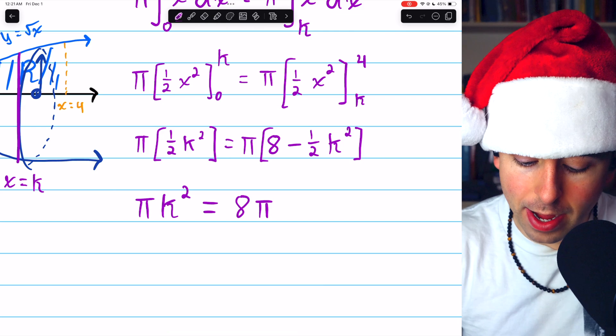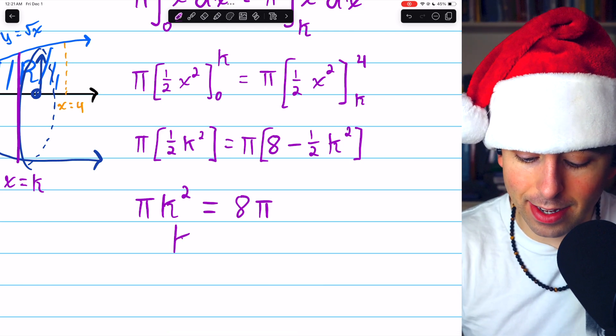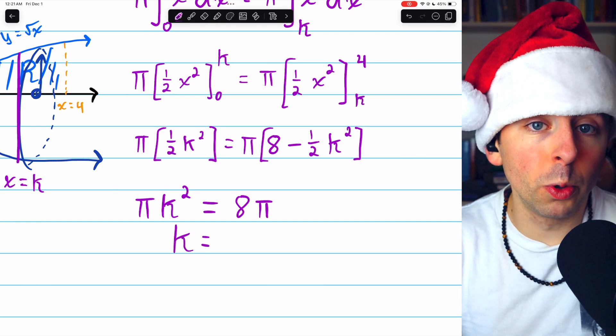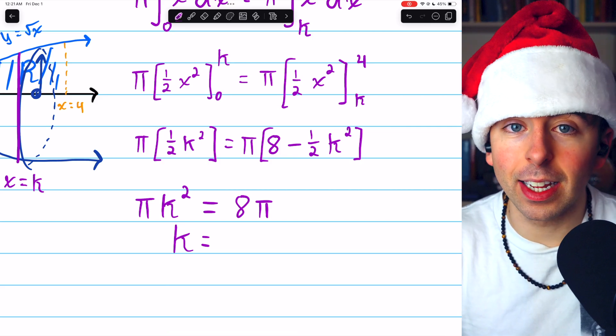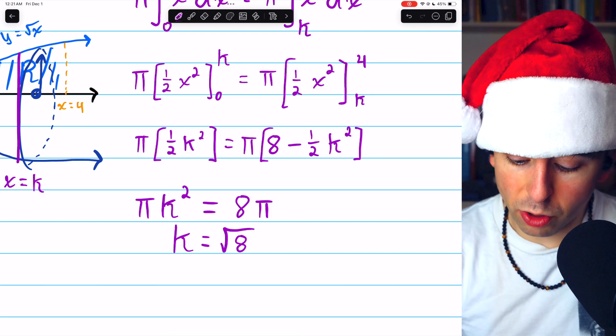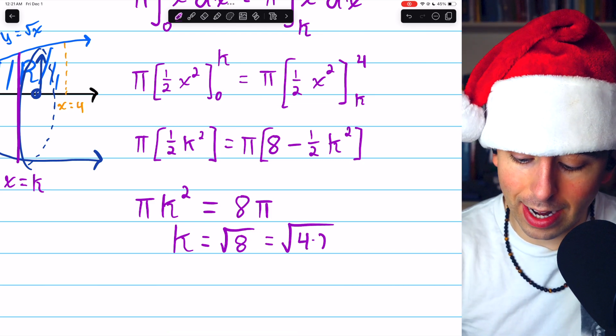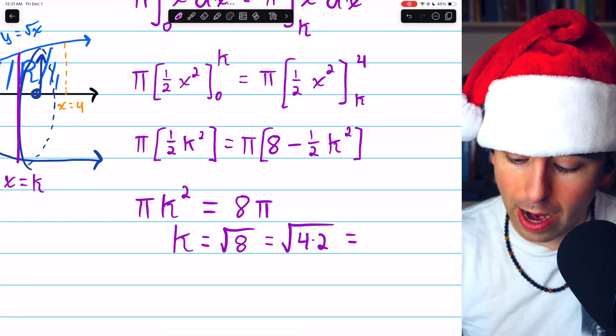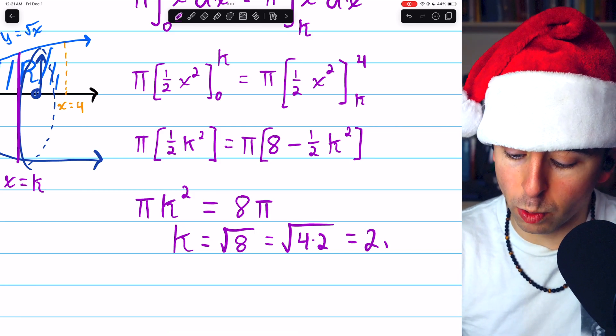Divide both sides by pi, and we have that K is equal to the square root of 8, right? Divide by pi, take the square root of both sides, K equals the square root of 8, which we can simplify because 8 is 4 times 2. So you can take this square root 4 out, giving us 2 root 2.